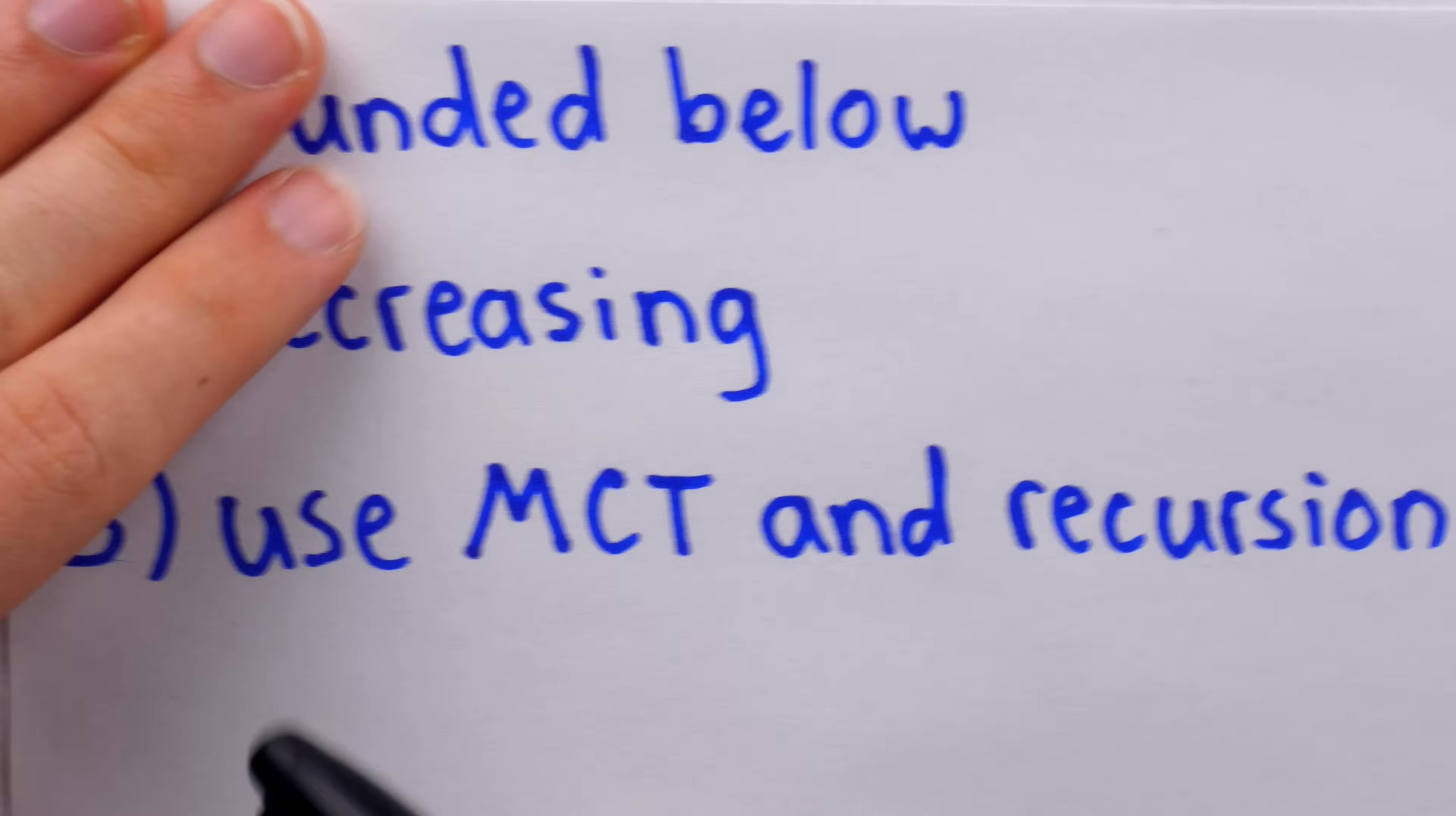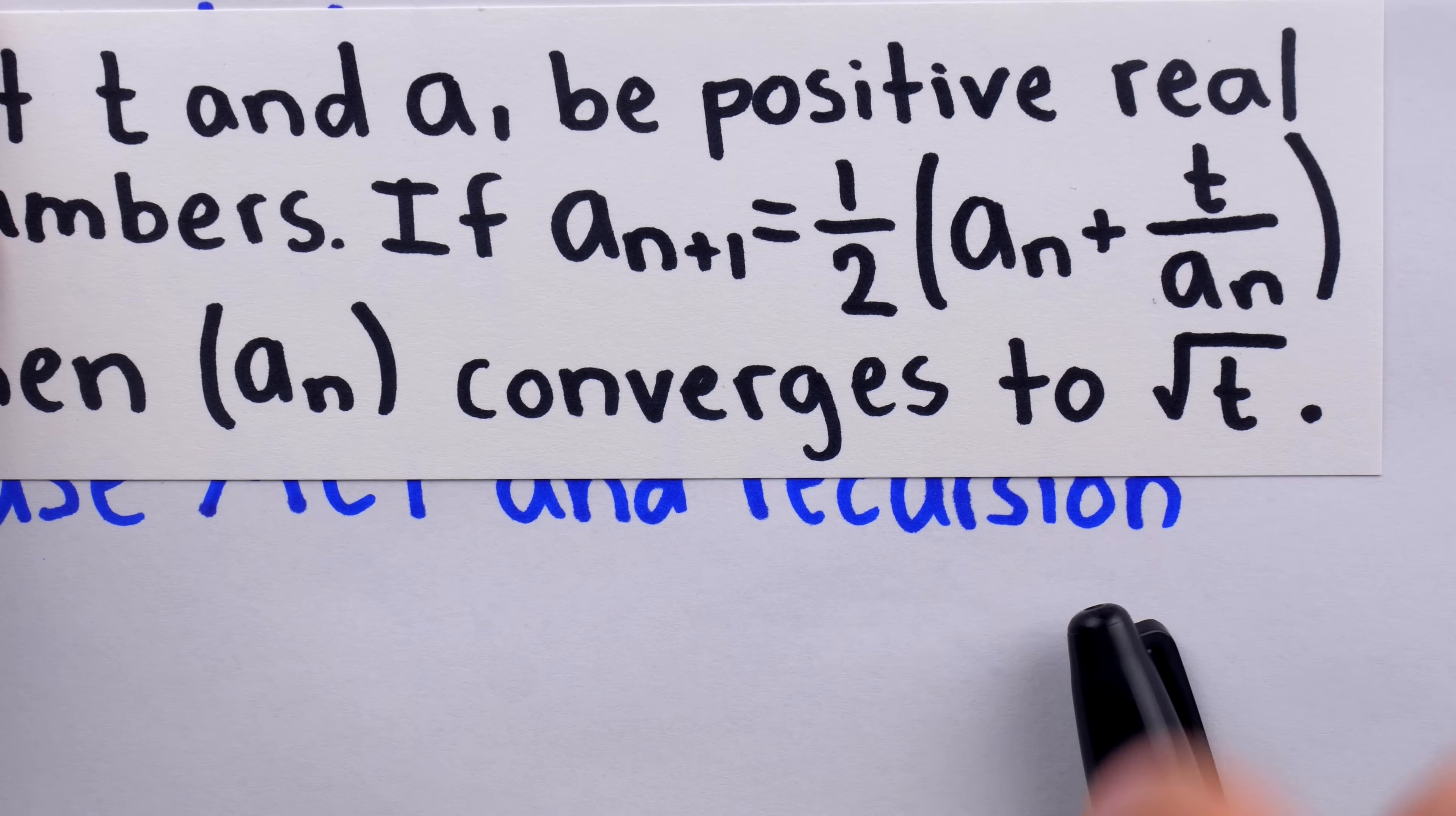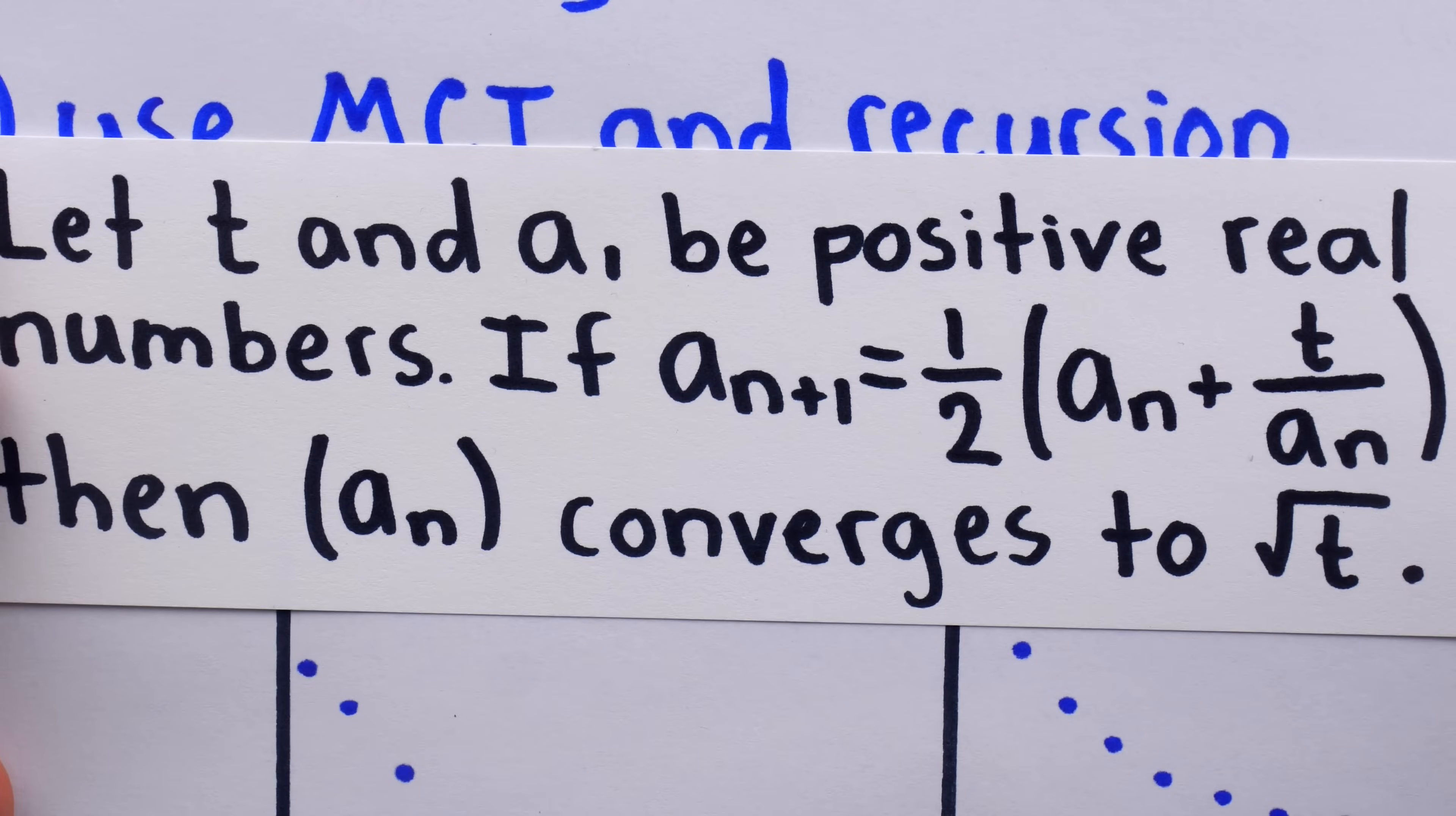So, once we know our sequence has a limit, we'll be able to use the recursion that defines it to establish exactly what that limit is. This might seem like a lot, especially if you haven't done proofs like this before, but I think you'll be surprised at how easy all the steps turn out being.